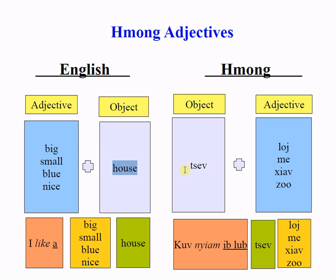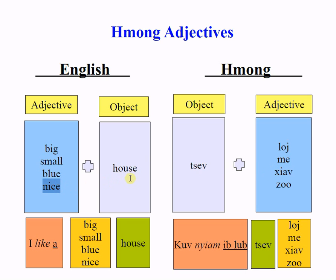Small house is 'J may.' Blue house is 'J sia.' Nice house is 'J zhong.'